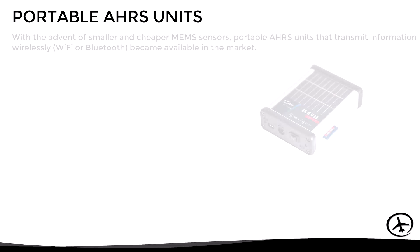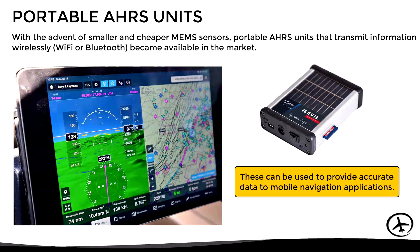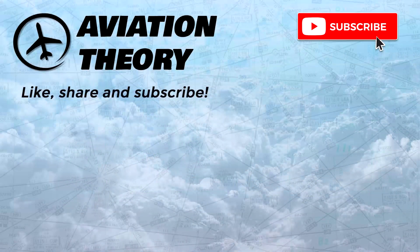Finally, with the advent of smaller and cheaper MEMS sensors, portable AHRS units that transmit information wirelessly through Wi-Fi or Bluetooth became available. These can be used to provide accurate data to mobile navigation applications such as ForeFlight or Air Navigation Pro. Although smartphones and tablets already incorporate MEMS sensors, their accuracy and reliability is much lower compared to portable AHRS units. I hope the information presented in this video was useful — if so, don't forget to share, like, subscribe, and leave a comment below. Thanks for watching.